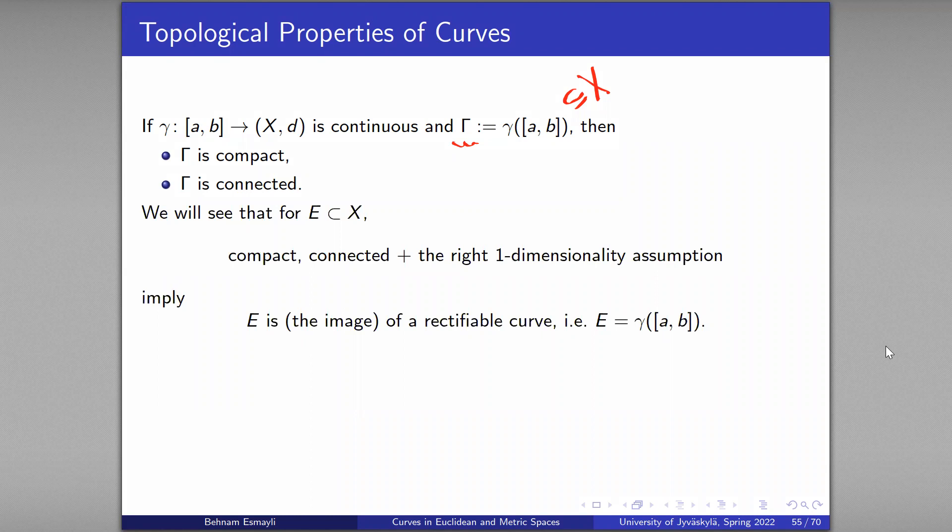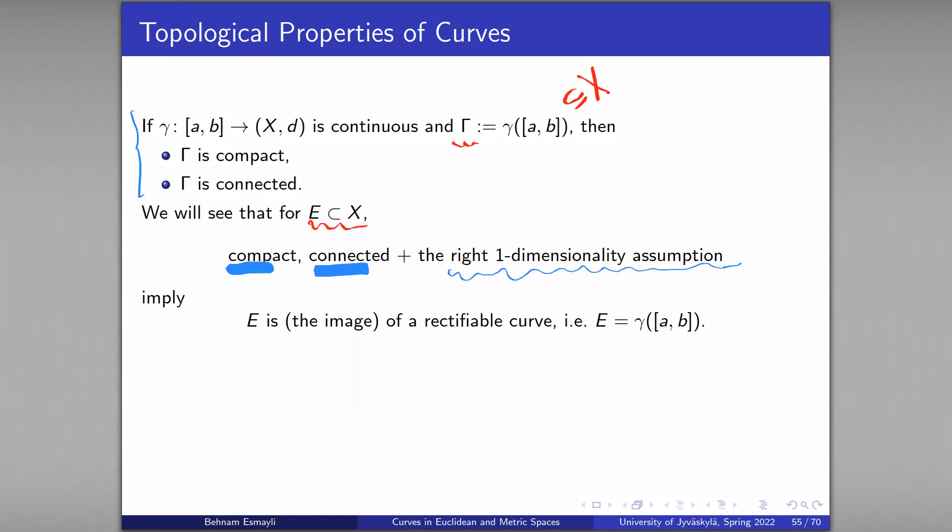Today we want to look at curves from a different point of view. We look at the subset of X, we start with the subset of X, and the question is when is it really a curve? The answer will be that, other than these two conditions which are necessary, a condition of one-dimensionality that we will make precise soon is sufficient to imply that E is in fact an image of a rectifiable curve.